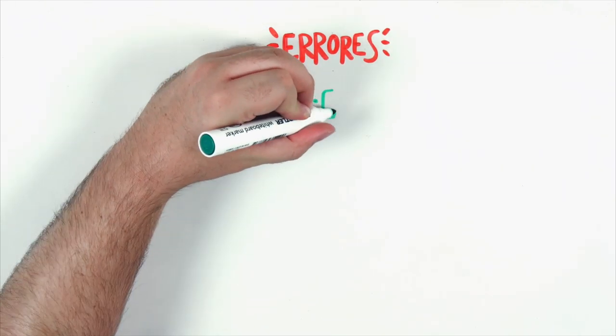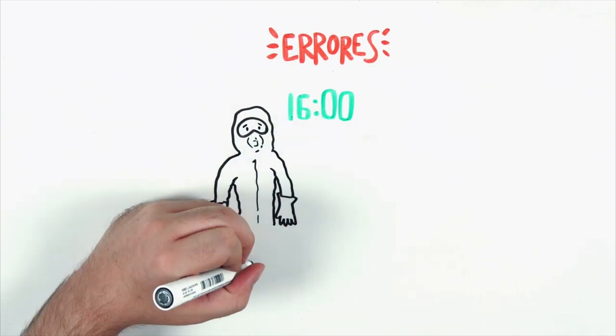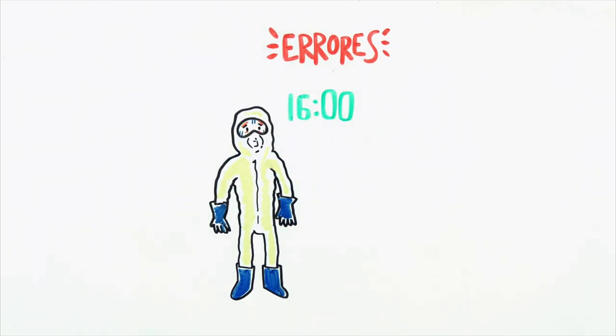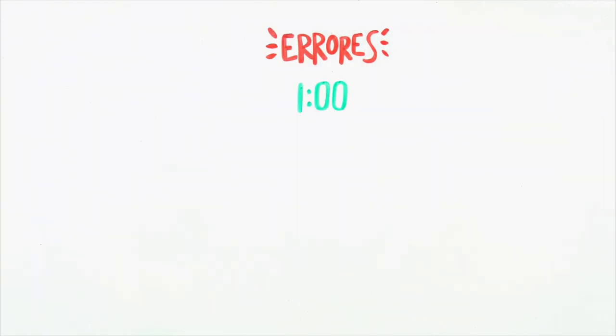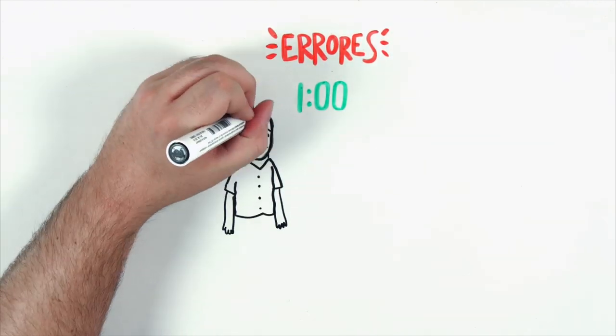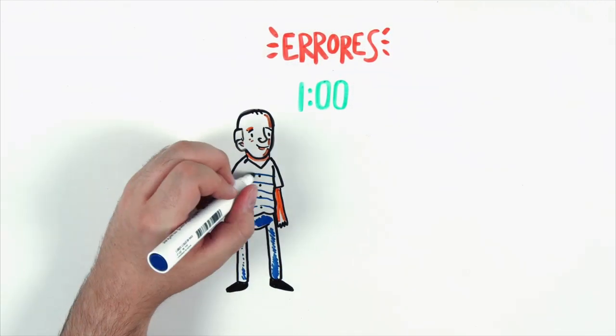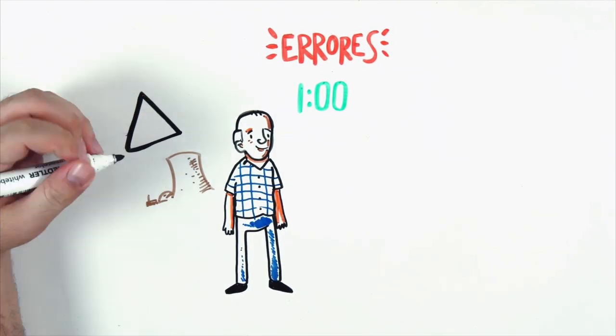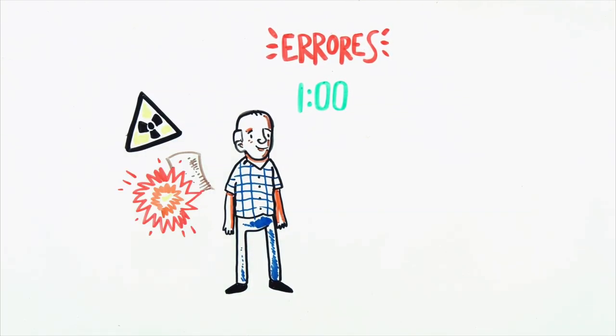This disaster was the result of several mistakes. First of all, the time of the test was delayed until the night, so it was carried out by workers that had never worked on this test before and were not qualified enough. That's why they did not follow the security measures. Secondly, the protection system was not ready to put up with these consequences.